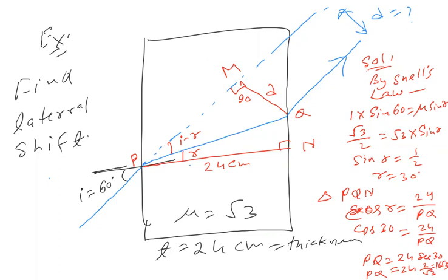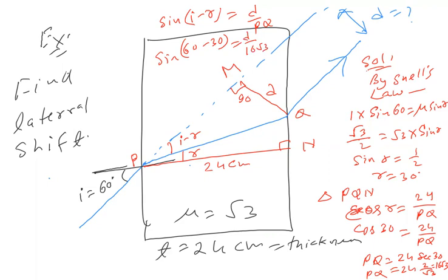अब आते हैं D पर — sin(I − R) = D / PQ → sin(60 − 30) = D / 16√3 → sin 30 = 1/2 = D / 16√3 → D = 8√3। तो lateral shift आ गया — 8√3 cm।